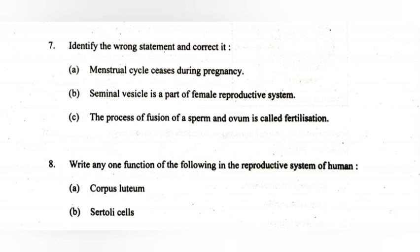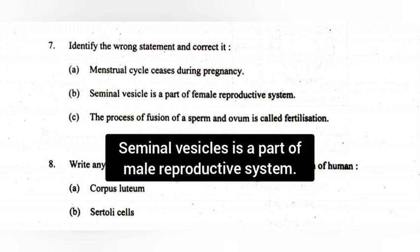7. Identify the wrong statement and correct it. A. Menstrual cycle ceases during pregnancy. B. Seminal vesicle is a part of female reproductive system. C. The process of fusion of sperm and ovum is called fertilization. Answer: B is the wrong statement. Correction: Seminal vesicle is a part of the male reproductive system.